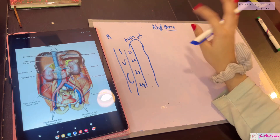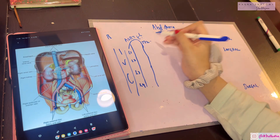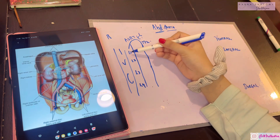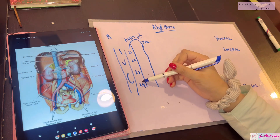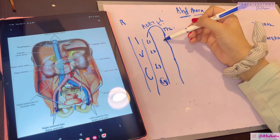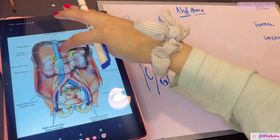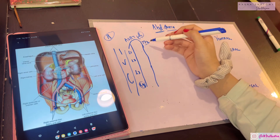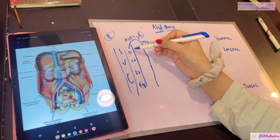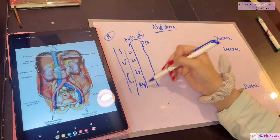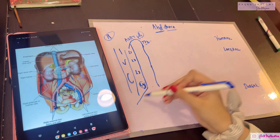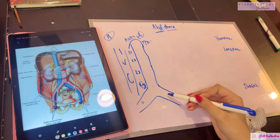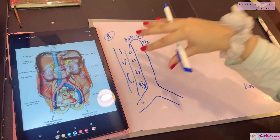The origin of the abdominal aorta specifically is at the T12 vertebral level. It will traverse the L1, L2, L3, L4 vertebrae - that is how long it is. At the L4 vertebra it will terminate. It lies to the left side of the IVC. The aorta begins at T12, lies to the left of the median plane, runs along L1-L4, and terminates at L4 by dividing into two common iliac arteries - the right and left common iliac.